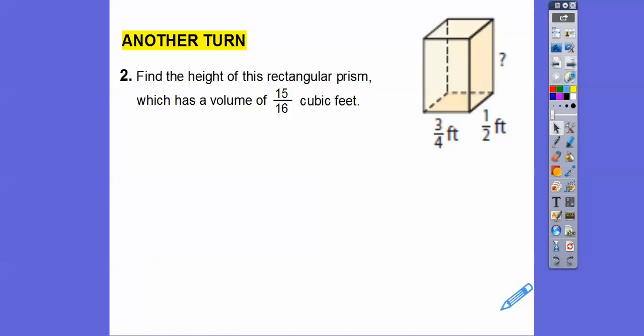All right, find the height of this rectangular prism which has a volume of 15/16 cubic feet. So volume is length times width times height. So 15/16 equals the length, which is 3/4, the width is 1/2, and the height is what we're looking for.